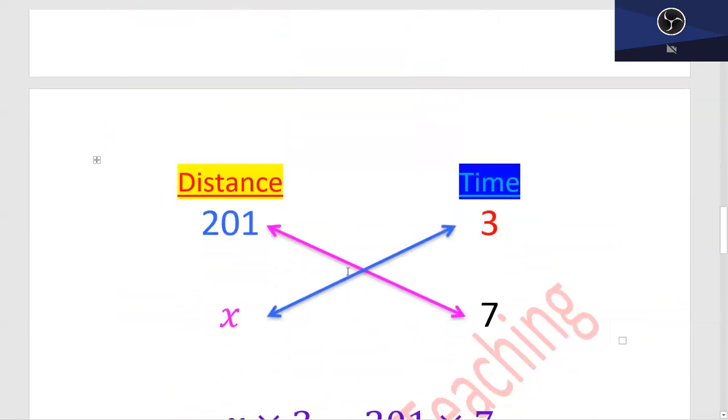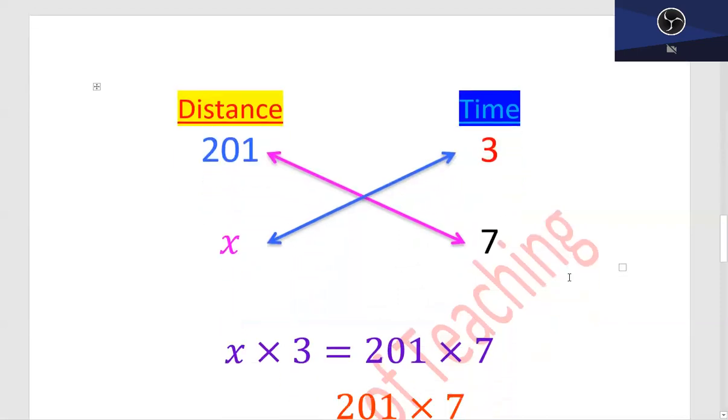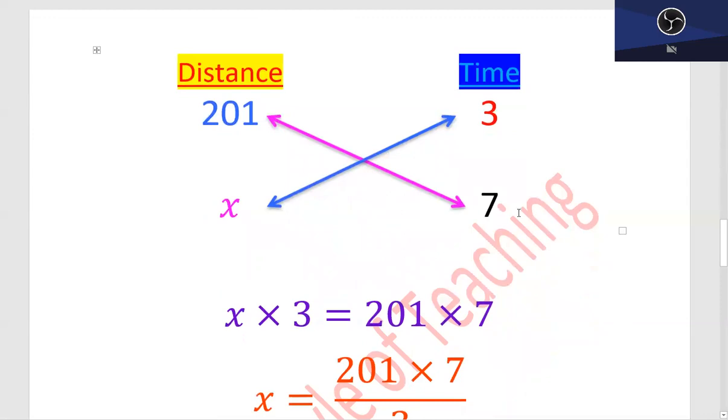Distance and time are related. When distance is 201, then time is 3 hours. Now time is increased to 7 hours.